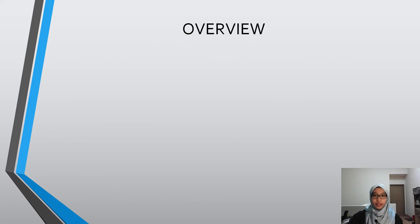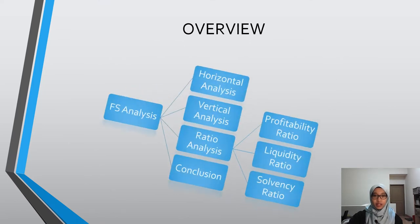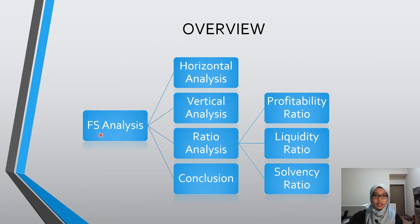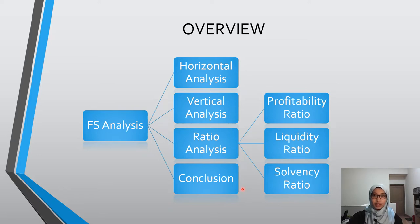This is an overview of the presentation. Financial statement analysis is divided into three analyses: horizontal analysis, vertical analysis, and ratio analysis. Ratio analysis is further divided into four ratios, but I'm going to use just three here — profitability ratio, liquidity ratio, and solvency ratio. Before I end, I'll give a conclusion to recommend which company is better to invest in.